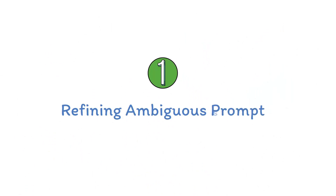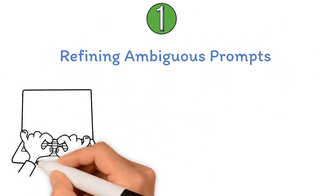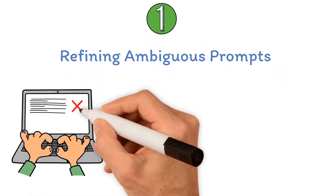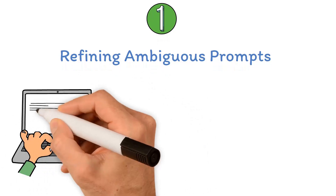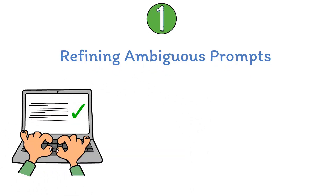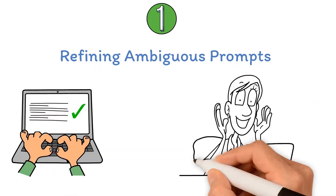Strategy one: refining ambiguous prompts — transforming unclear or overly broad prompts into more specific and focused ones to guide the AI model more effectively.